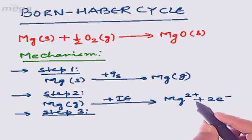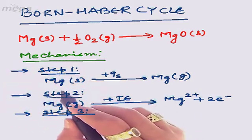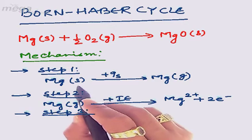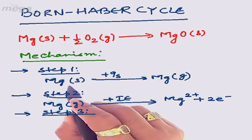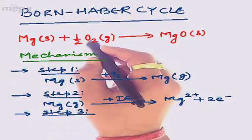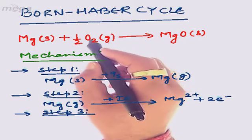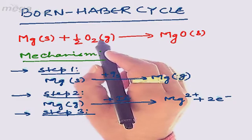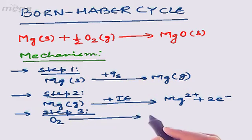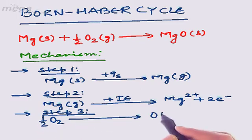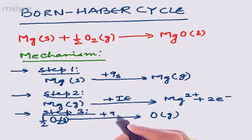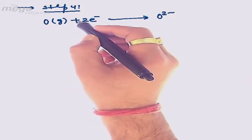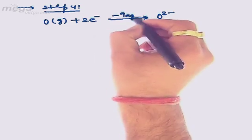In step three, oxygen must gain the two electrons from magnesium's valence shell. However, electrons can only be added or removed from an atom when it is in the gaseous, isolated, uncombined state. Since oxygen is in the form of O₂, which is a combined state, we must first convert it to isolated oxygen atoms. So O₂ is converted to O gas — taking half a mole of O₂ — requiring energy called the heat of dissociation. In step four, electrons from magnesium are added to the oxygen atom forming O²⁻, which releases energy called the heat of electron gain.